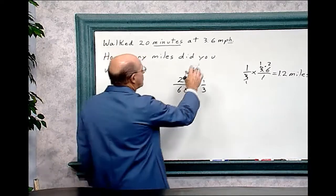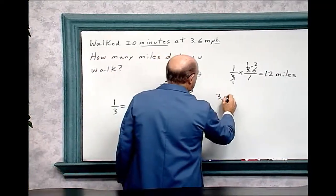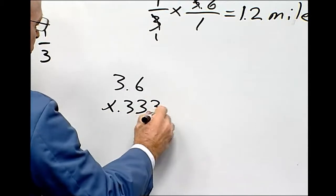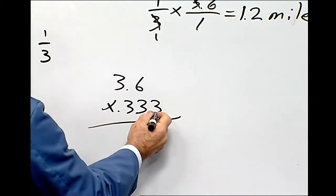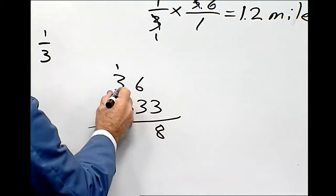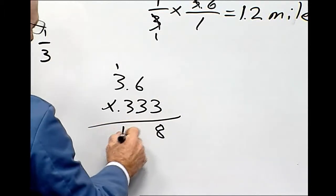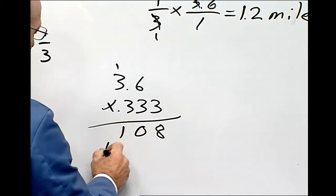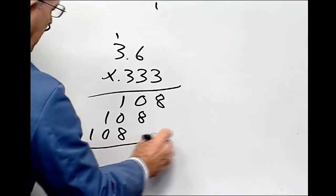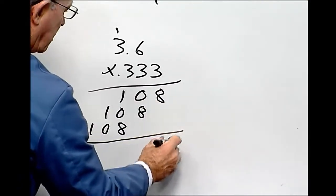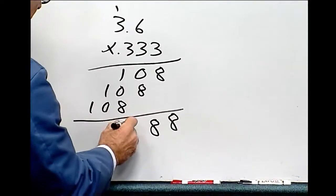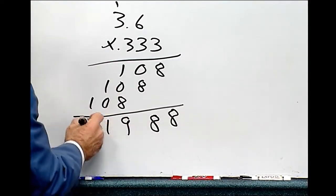And let's multiply then 3.6 by 0.333. 3 times 6 is 18. 3 times 3 is 9 plus 1 is 10, and it keeps on repeating.